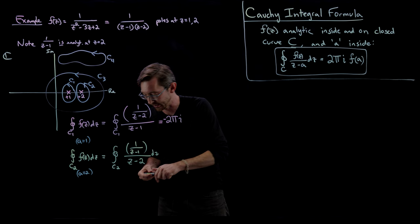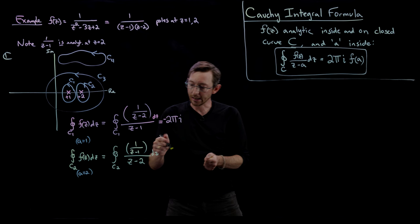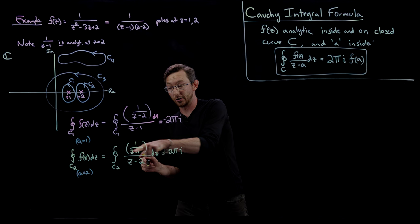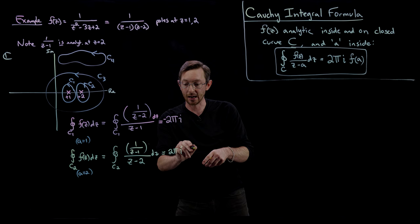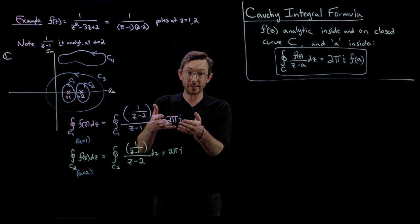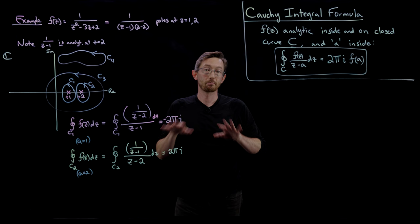That's going to equal two pi i times this analytic part of the function evaluated at z equals two. If I plug in z equals two, I get one over one, so my f of a is just times one. So two pi i. The integral around C1 is minus two pi i, and the integral around C2 is plus two pi i.